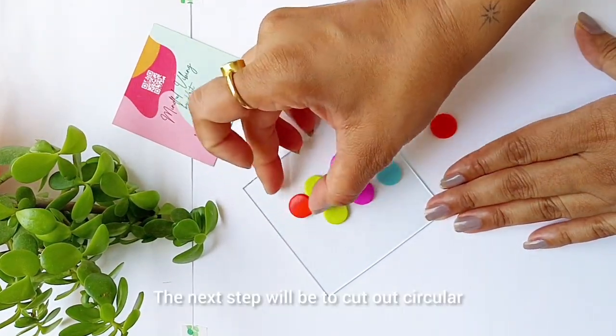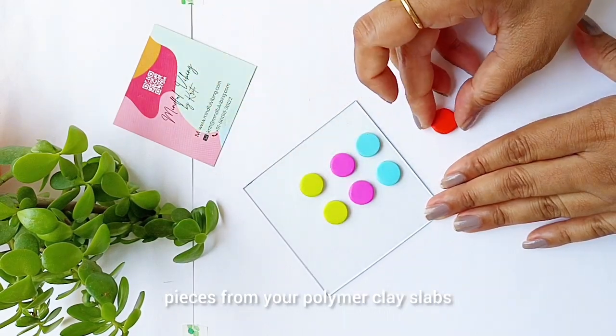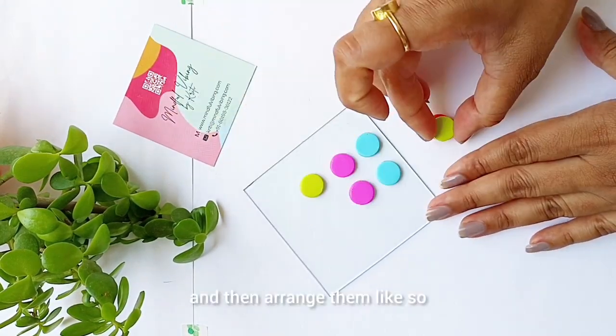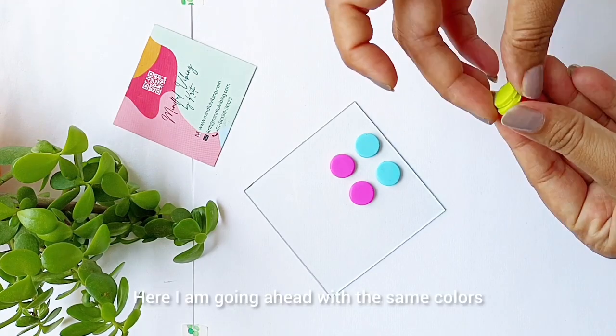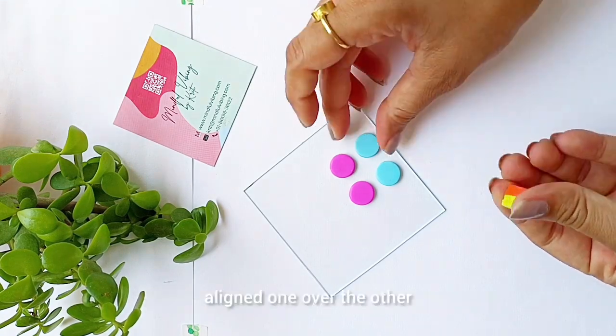The next step will be to cut out circular pieces from your polymer clay slabs and then arrange them like so. Here I am going ahead with the same colors aligned one over the other.